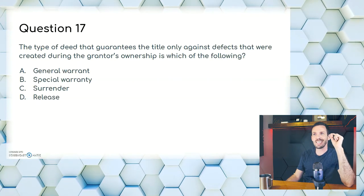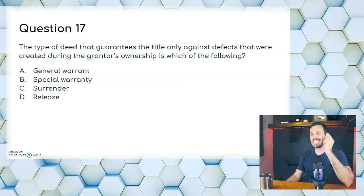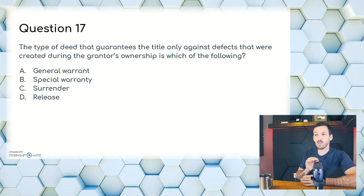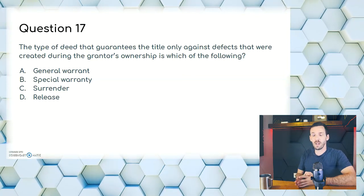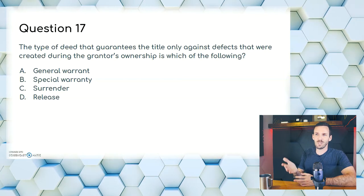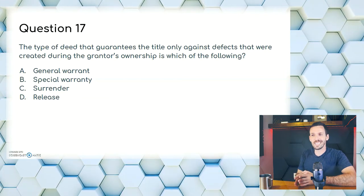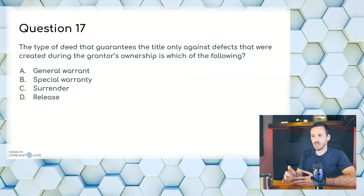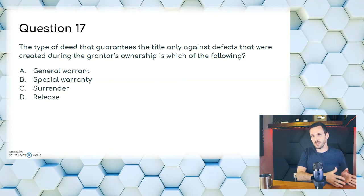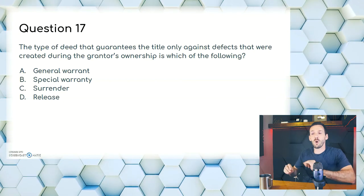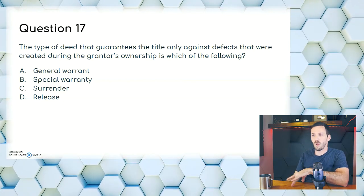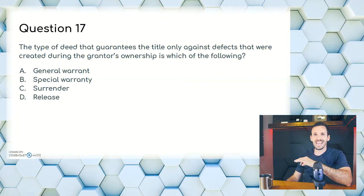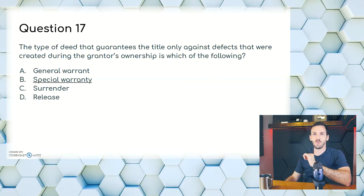Question seventeen: the type of deed that guarantees the title only against defects that were created during the grantor's ownership is which of the following? A, general warranty; B, special warranty; C, surrender; or D, release. General covers all previous owners. Special only covers the current grantor's ownership — the one giving the property. So the answer here is B, special warranty.